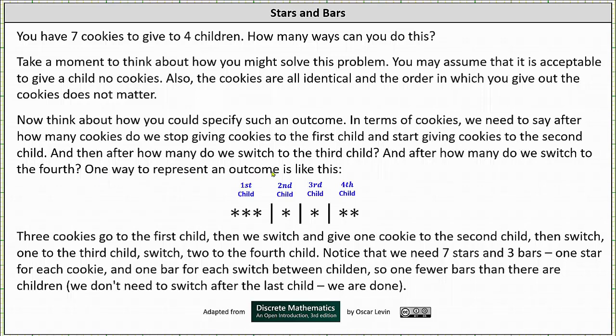One way to represent an outcome would be to use stars and bars as shown below. This sequence of stars and bars indicates three cookies go to the first child, then we switch and give one cookie to the second child, and then we switch, give one cookie to the third child, and then we switch again and give the two remaining cookies to the fourth child.